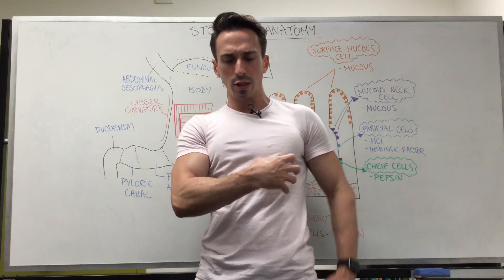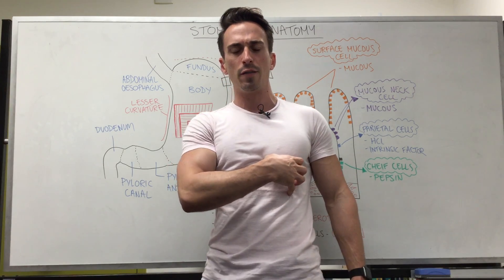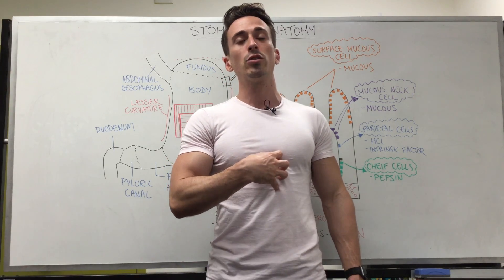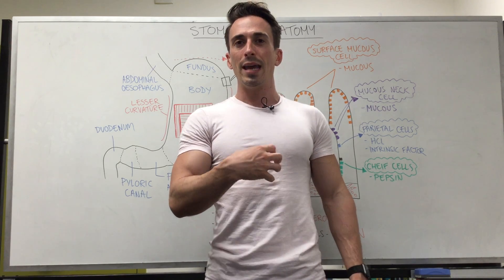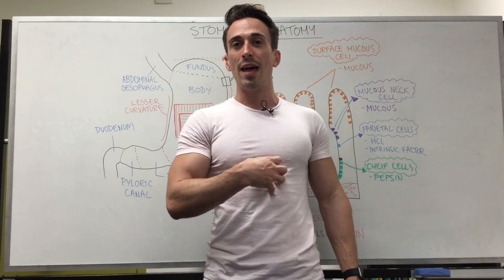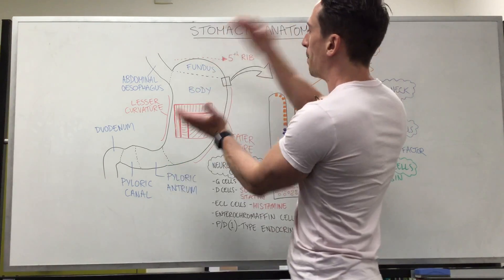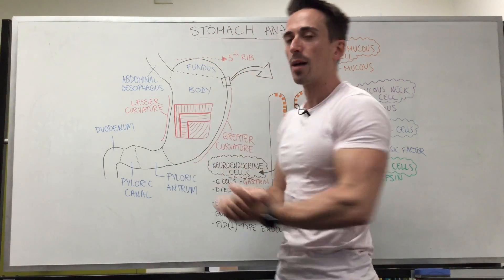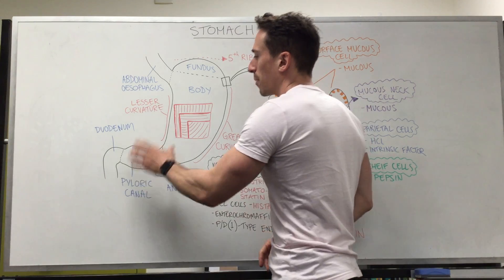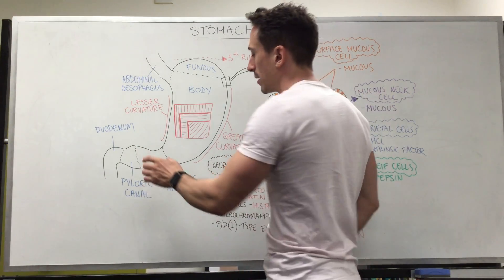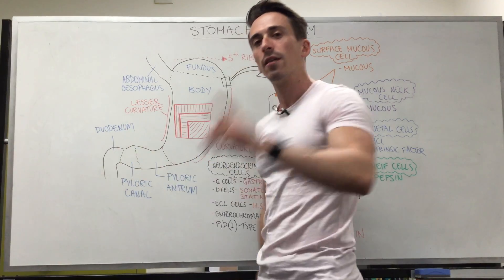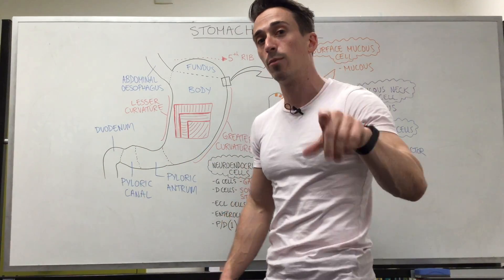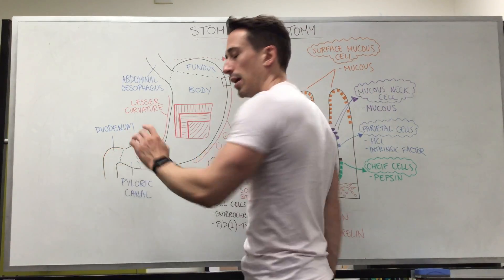Now if you have stomach pain, you don't actually feel it in that area — you feel it in the epigastric area, and that has to do with embryological origins, from when you were developing in your mummy's tummy or womb. You've also got the body of the stomach, which is the majority of it, then the pyloric area, which includes the pyloric antrum, then the pyloric canal, and then the very first part of the small intestines that we term the duodenum.